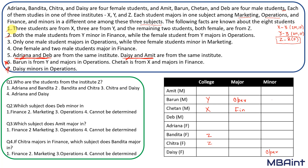Going back to the second information: both male students from Y minor in finance. We know Barun is a male student from Y, so Barun will minor in finance. There is another male student from Y, and he will also minor in finance. The female student from Y majors in operations, but we don't yet know if that is Adrina or Daisy.